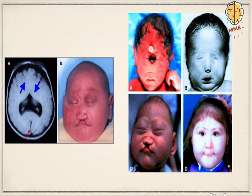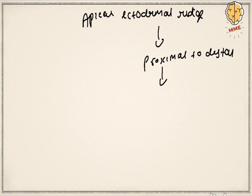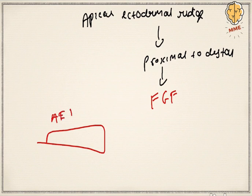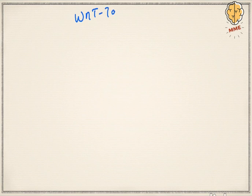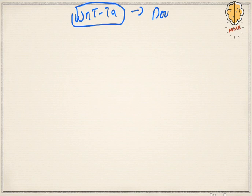The next gene is WNT7A, which is key for dorsal-ventral development — mainly dorsal development. Once WNT7A is transcribed, it activates LMX1 gene, leading to development of the dorsal side. For the ventral side, another transcription factor called EN-Grailed 1 is needed. Simply put, the dorsal side contains extensors and the ventral side contains flexors.